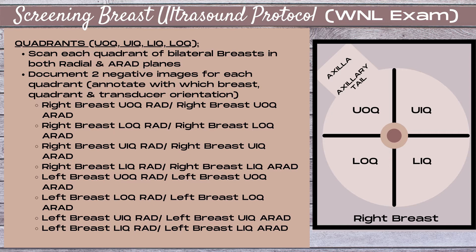I generally tend to scan the right breast first, however that's just personal preference — it doesn't matter what order the breasts are scanned in, as long as you've covered all of the breast tissue. Moving to the left breast, I would do my left breast upper outer quadrant radial, then left breast upper outer quadrant antiradial, and move through all the various quadrants just like I did for the right breast. It also does not matter what quadrant order you scan — you can do it in any order.